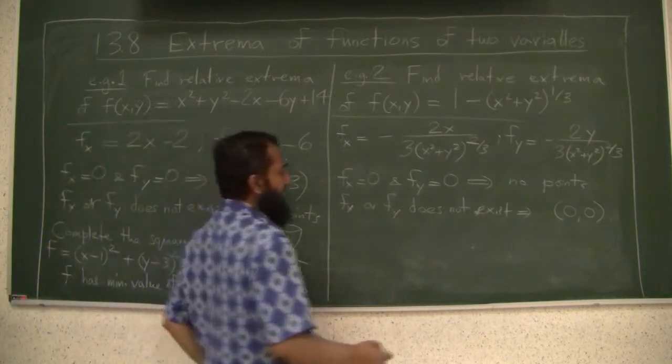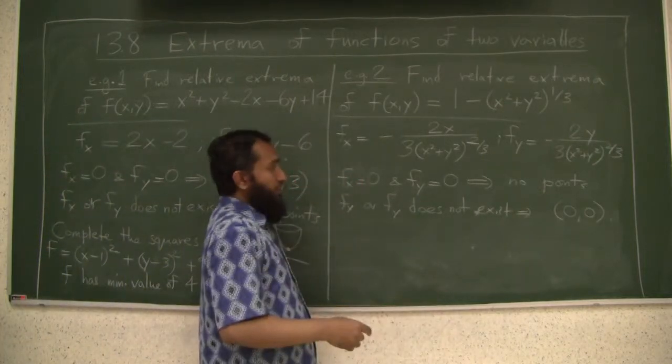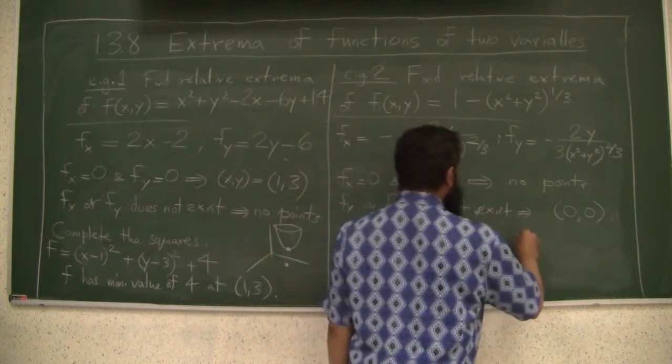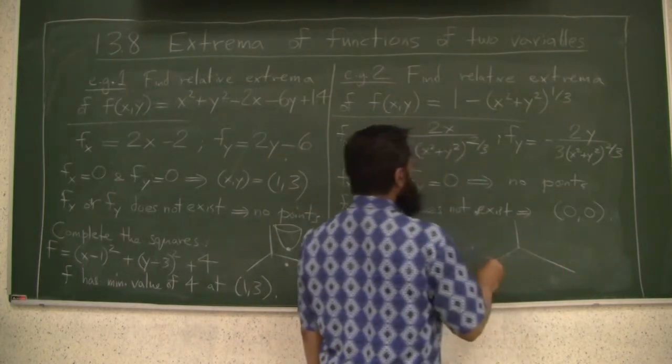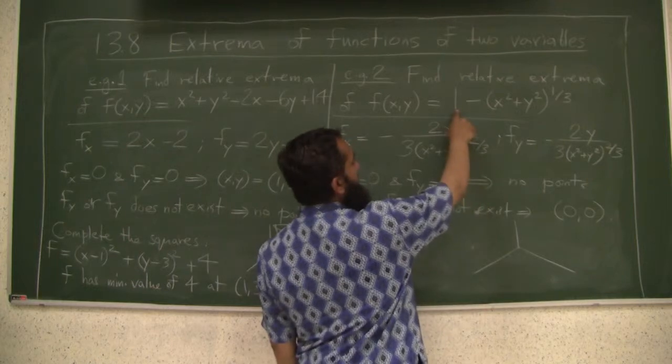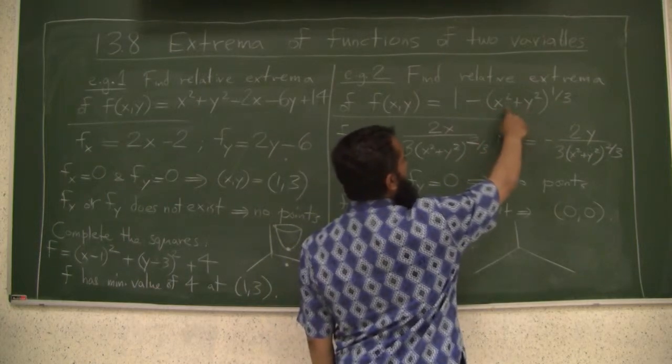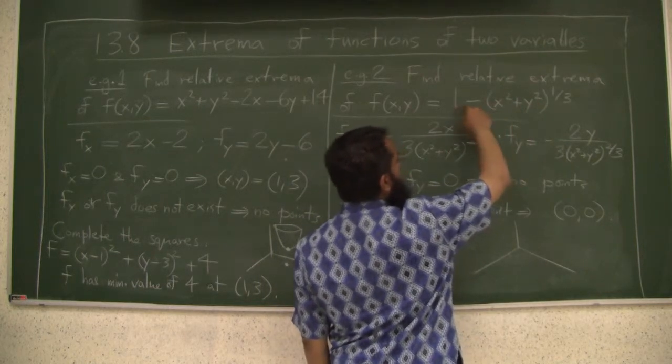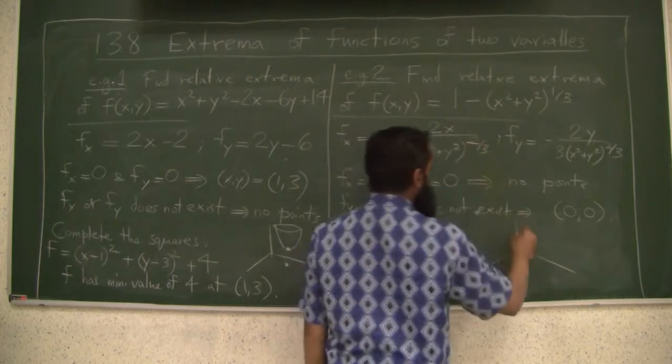And what happens here is that because partials don't exist, there is a sharp point. The graph of this function is like this. You can see that as x and y get bigger, this whole thing gets subtracted from one. So at zero there is a height of one.